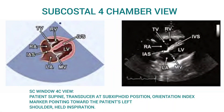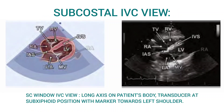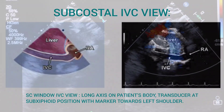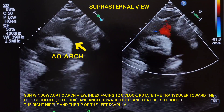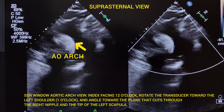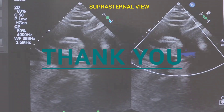Our next window is the subcostal window, which is mainly used to assess the inferior vena cava. Last but not the least, the suprasternal window is used to assess the aortic arch.